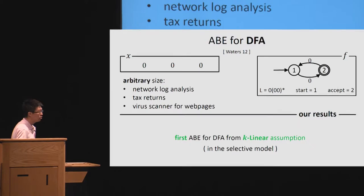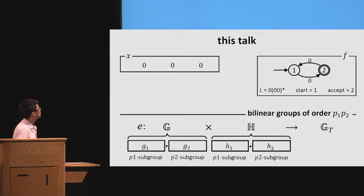So in our work, we give a first ABE scheme for DFA from k-linear assumption. This is a static assumption. The complexity is constant. So in this talk, I have to explain our idea using bilinear group of composite order, but I promise you that everything I will have told you can be translated into a prime order group and it can be based on k-linear assumption.